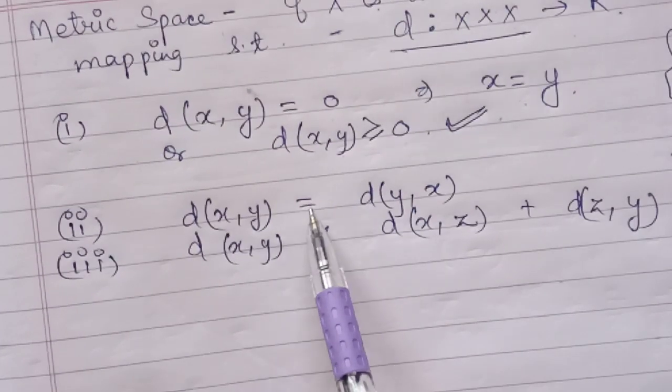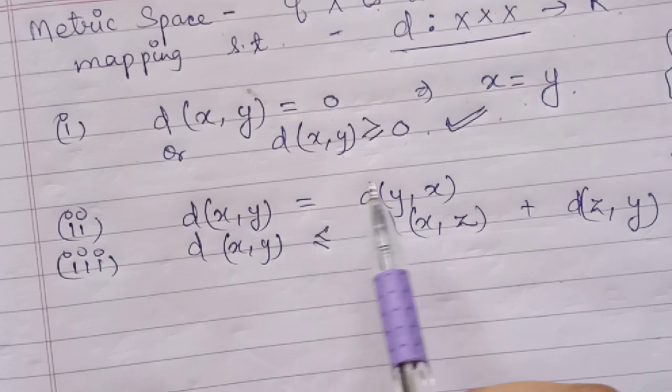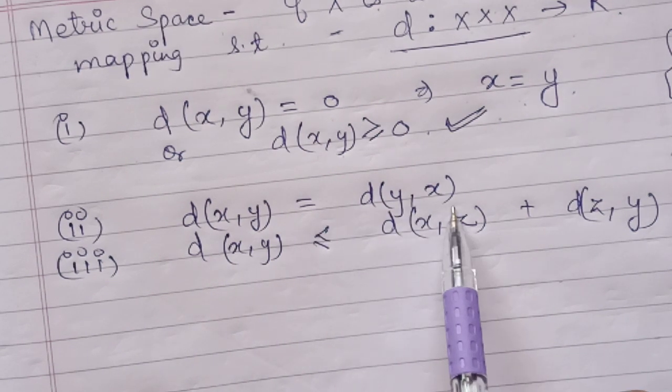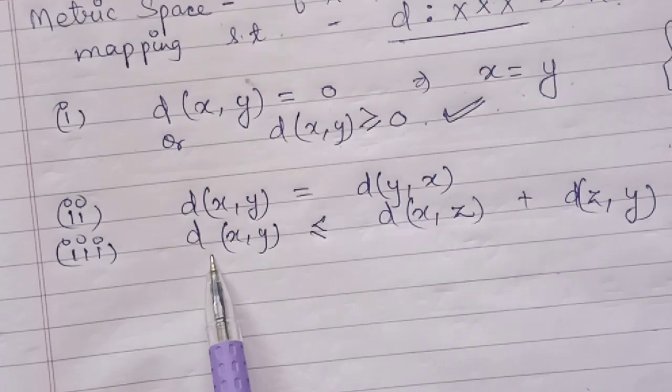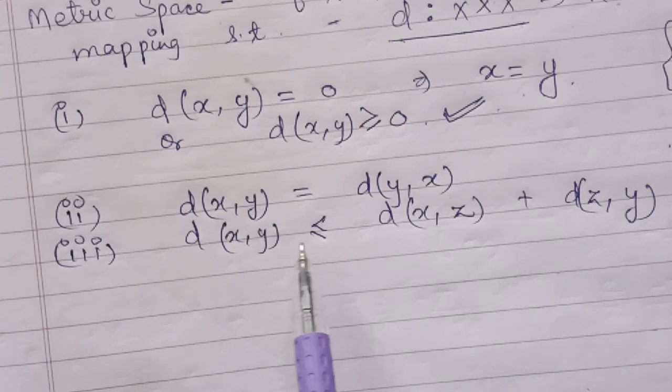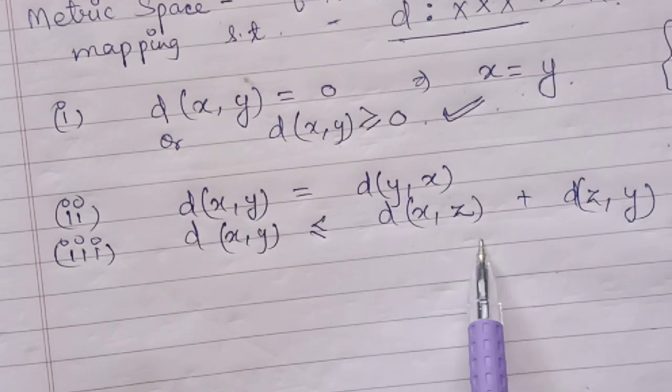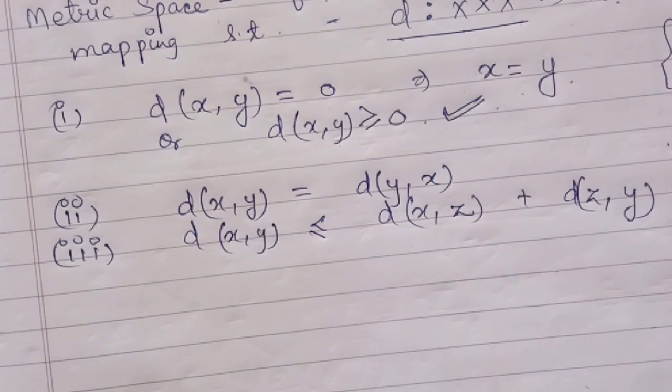The second condition is distance between x, y equals distance between y, x. And the third is distance between x, y is less than or equal to distance between x, z plus distance between z, y.